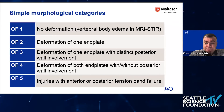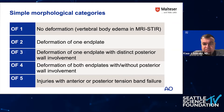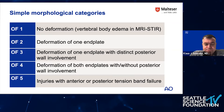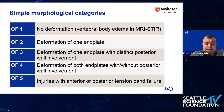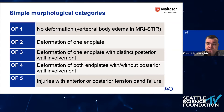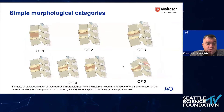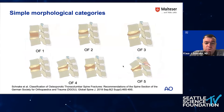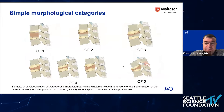OF2 means deformation of one end plate — upper or lower — with only minor or no posterior wall involvement. OF3 is a deformation of one end plate with a distinct posterior wall involvement, looking a little like an incomplete burst type injury. OF4 is a deformation of both end plates, with or without posterior wall involvement. OF5 are injuries with either anterior or posterior tension band failure.